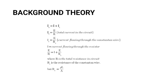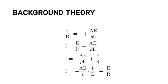Substituting back into the equation gives: E/R = I + E/R_c. Now R_c, the resistance of the constantan wire, equals ρL/A, where ρ is resistivity, L is length, and A is cross-sectional area. Substituting gives: E/R = I + AE/ρL. Rearranging to make I the subject: I = E/R − AE/ρL, which can be written as I = AE/ρ × (1/L) + E/R.